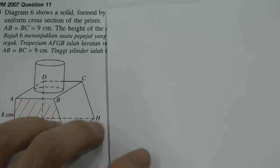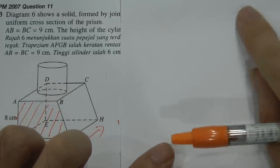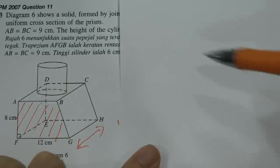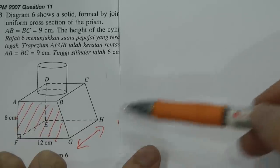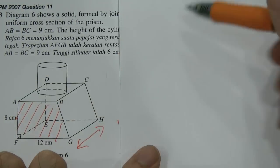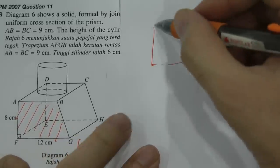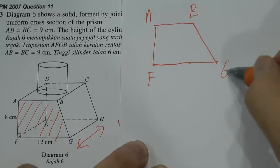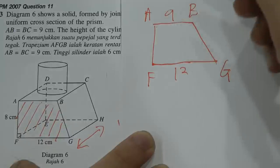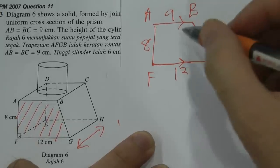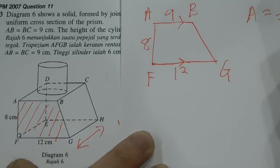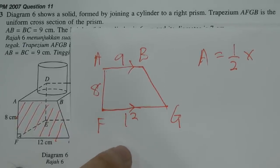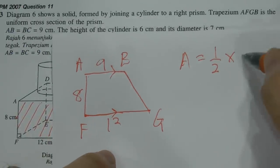Next, we have to find the volume of the right prism. To do that, we find the area of the trapezium and multiply by the height. Drawing the trapezium FABG: the bottom is 12, the top is 9, and the height is 8. Since these two lines are parallel, the formula for the area of a trapezium is half multiplied by the sum of the two parallel sides.